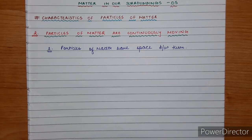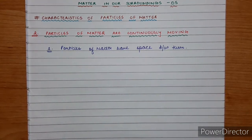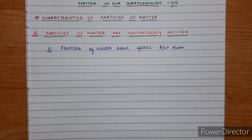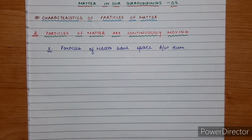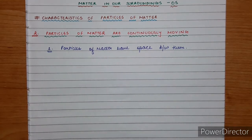आज second characteristic के बारे में पढ़ने वाले हैं — particles of matter are continuously moving। Characteristic का मतलब है कोई खास special feature। Particles of matter की second खास feature यह है कि वो continuously move कर रहे होते हैं। So today we will learn the second characteristic of particles of matter: particles of matter are continuously moving।